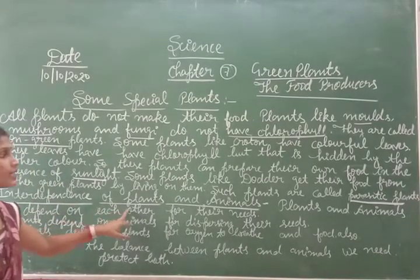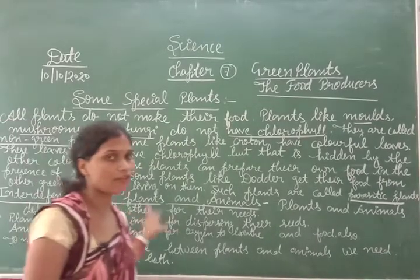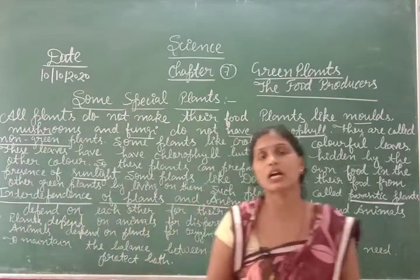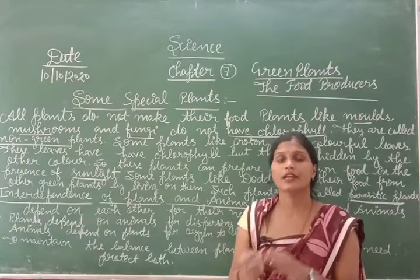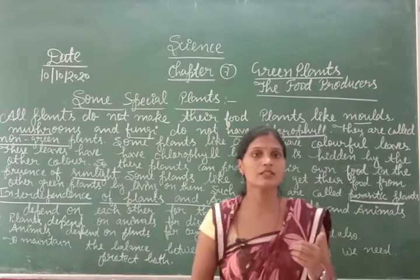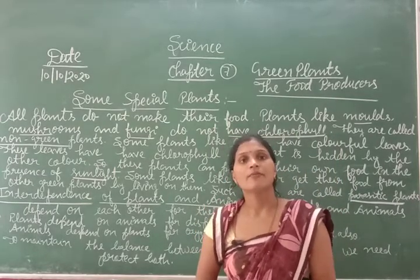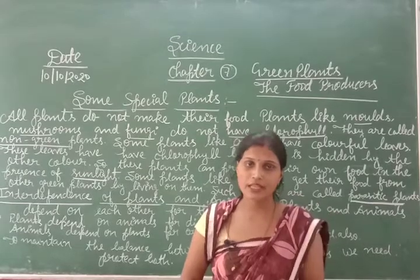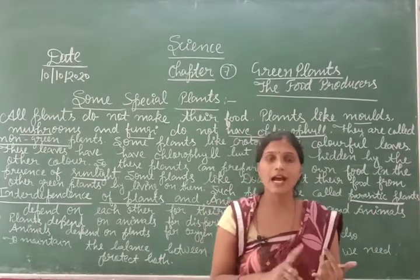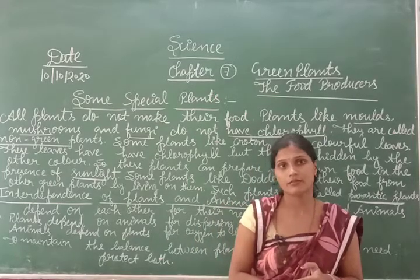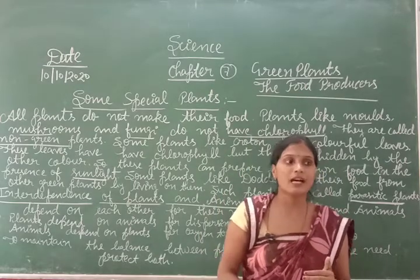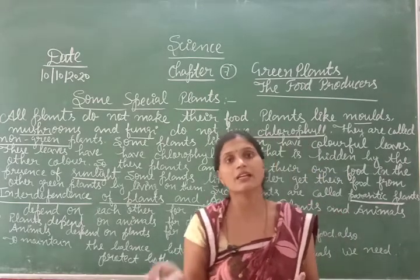Interdependence of plants and animals. Plants and animals are both dependent on each other for their needs. For example, plants give oxygen to us during breathing, and also take carbon dioxide during photosynthesis. When we release carbon dioxide, it is taken in by plants.